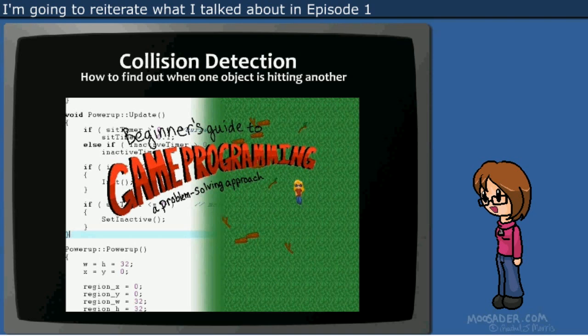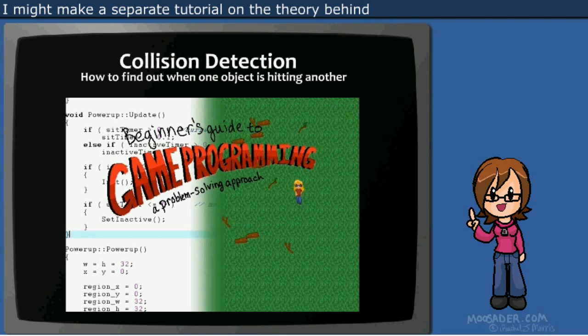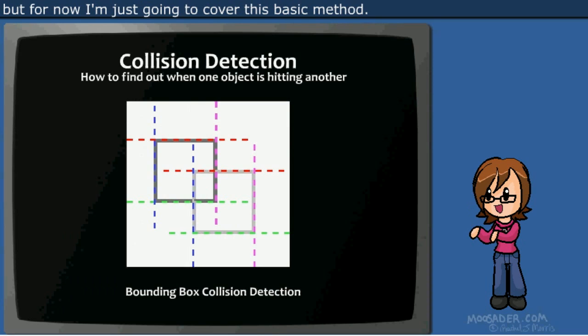I'm going to reiterate what I talked about in Episode 1 of Beginner's Guide about bounding box collision detection. I might make a separate tutorial on the theory behind different methods of collision detection one day, but for now I'm just going to cover this basic method.